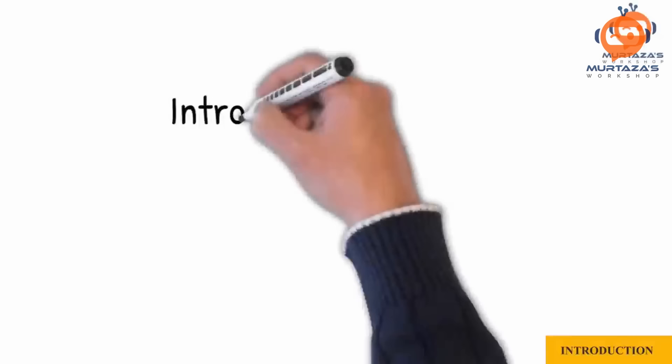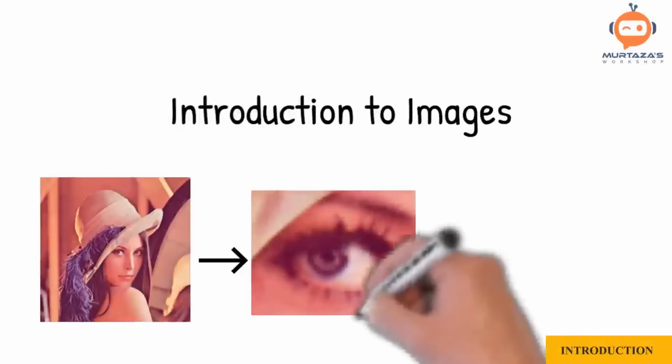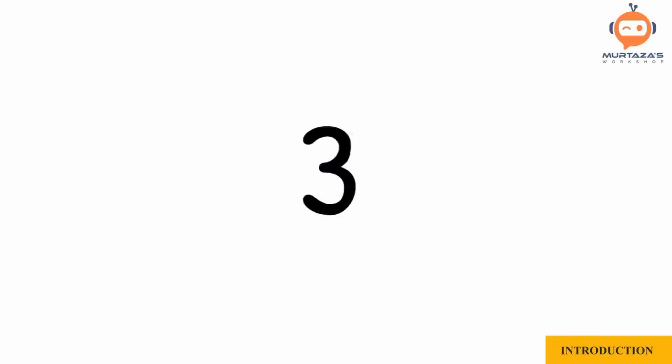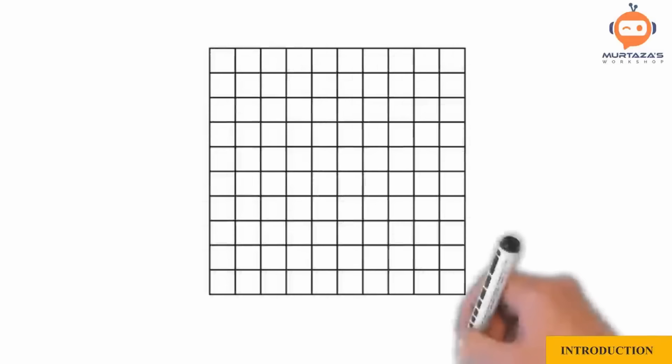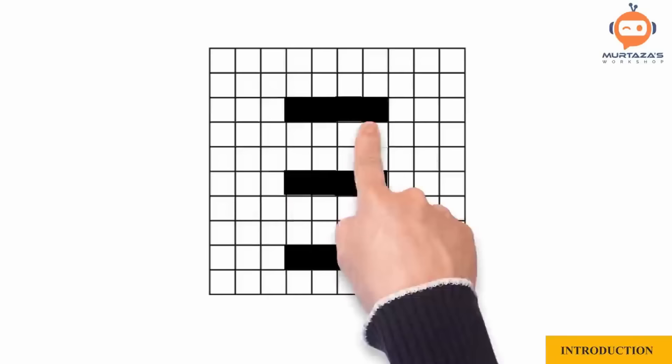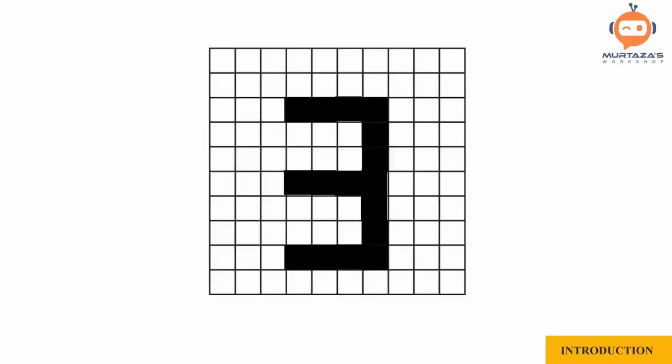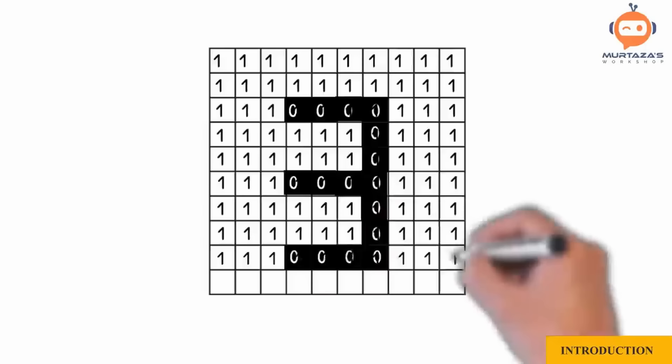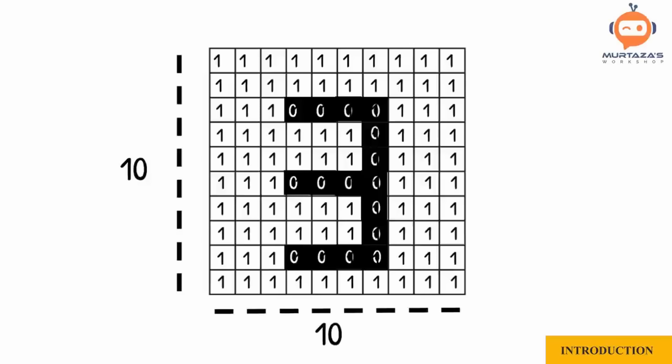Let's start with an introduction to images. What are images made of? Let's say I wanted to display the number three — I'll take an array of boxes where each box could be filled or empty. To write the number three, we would color a few boxes to create that shape. Some boxes are white, some are black. We can denote all the black boxes as zero and all the white boxes as one. In this example we have a 10 by 10 grid; if we wanted more detail we can increase the number of boxes.